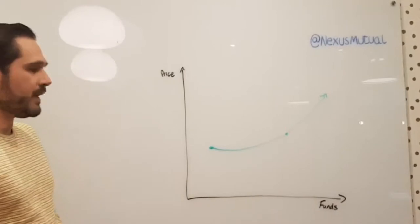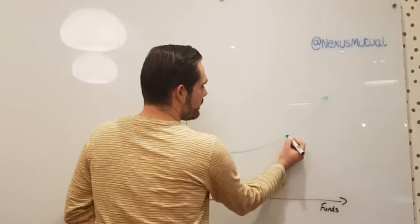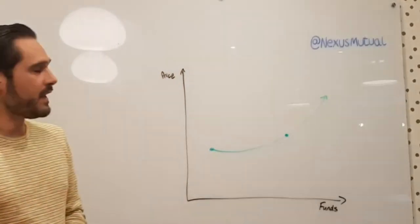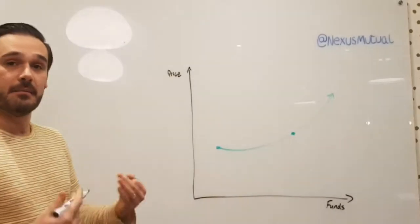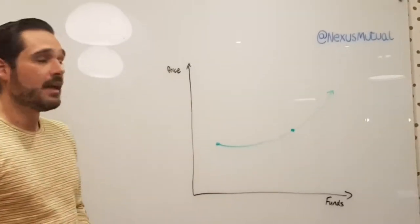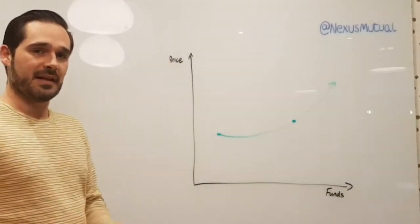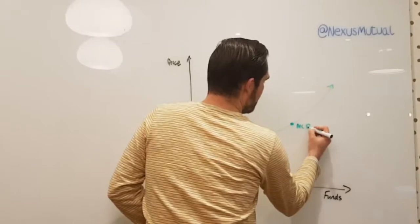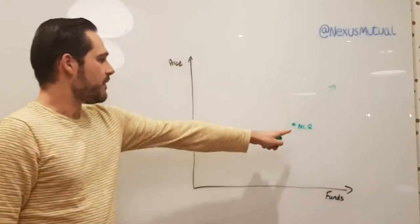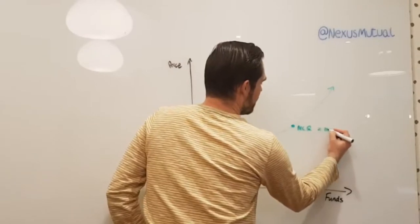There's one critical point for the token model, and that's this point here, where the MCR, which is called our minimum capital requirement, that's when we basically have the same amount of funds in the pool as we need. At this point, if the funds we have in the mutual, that would mean the MCR would equal 100%.